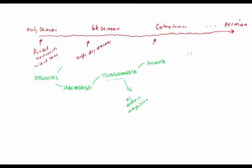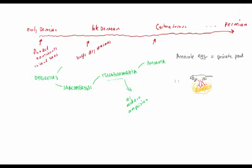In the case of the Amniota there is the amniote egg — you can think of it as a private pond in which the embryonic vertebrate can complete the aquatic portion of its development so that it can hatch out as a completely terrestrial baby. There's a nice big yolk sac from which it feeds, with a blood supply providing nutrition. All that development happens inside some type of shell membrane, and there may be albumin on the outside.